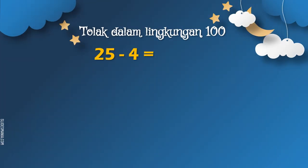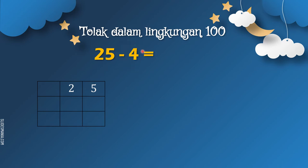Sekarang Cikgu nak ajar kita tolak dalam lingkungan 100. Contohnya, 25 tolak 4 sama dengan... Kita akan buat dalam bentuk lazim. Macam mana nak tulis bentuk lazim? Tuliskan dulu 25 — 2 di rumah puluh dan 5 di rumah sa. Seterusnya, tolakkan dengan 4. 4 ialah rumah sa, jadi 4 mesti berada di bawah 5, tak boleh berada di bawah 2 sebab 2 ialah puluh. Kita tolakkan dengan 4, buatkan 2 garisan di bawah. Sekarang kita akan tolakkan dulu di sebelah kanan, iaitu rumah sa, iaitu 5 tolak 4.